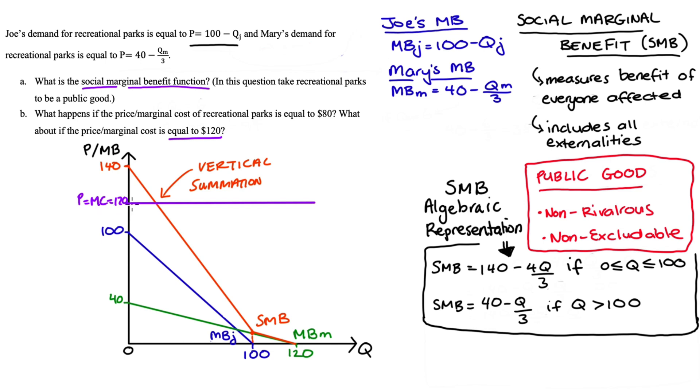We can see from our diagram though again assuming that there are no externalities in production so marginal cost is equal to our social marginal cost that the optimal amount of recreational parks is indeed positive it's here. We can do the algebra again our social marginal benefit is 140 minus 4q/3 and our marginal cost is 120.